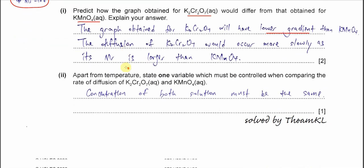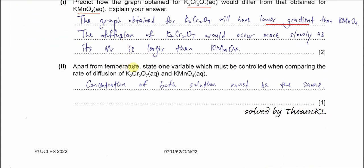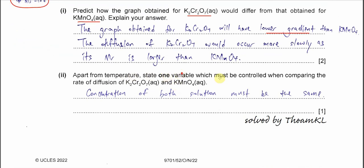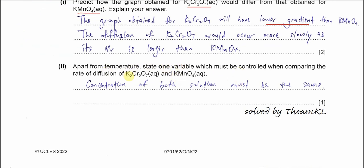Part 2: apart from temperature, state one variable that must be controlled when comparing the rate of diffusion between potassium dichromate and KMnO4. One thing that's very important is concentration. Concentration of these two solutions must be the same if we want to compare. This is the most important thing. Of course, volume also needs to be controlled, but concentration is very important. We must make sure two concentrations are the same, then they have a fair comparison.